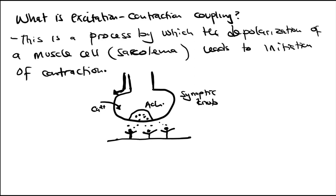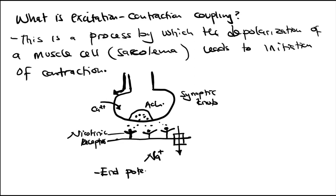The motor end plate is simply the plate where the neuron and the muscle meet. When the nicotinic receptors are stimulated, ligand-gated sodium channels open at the muscle end plate, causing an influx of sodium into the cell. This influx of positively charged sodium leads to production of an end plate potential — a disturbance in the resting membrane potential where it becomes more positive.